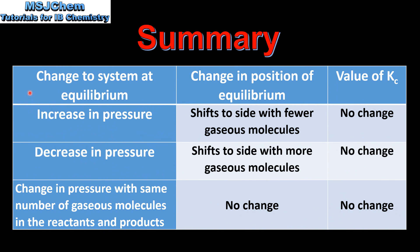Moving on to a change in pressure: an increase in pressure shifts the equilibrium to the side with fewer gaseous molecules. If we decrease the pressure, the equilibrium will shift to the side with more gaseous molecules. A change in pressure where there are the same number of gaseous molecules in the reactants and the products has no change in the position of equilibrium. All of these changes have no effect on the value of Kc.